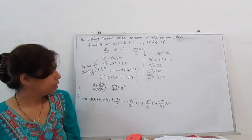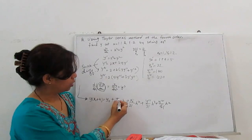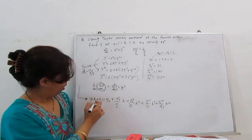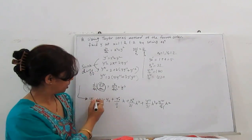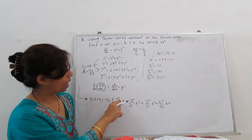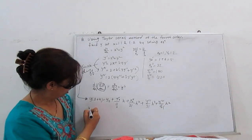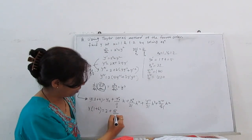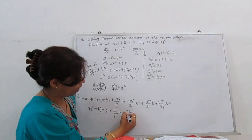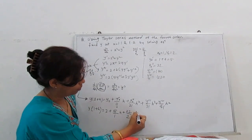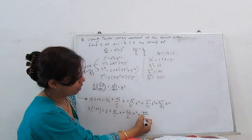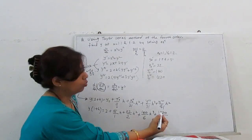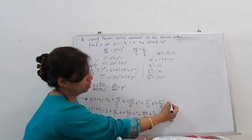The Taylor series expansion to fourth order is: y(x₀ + h) = y₀ + y'₀/1! · h + y''₀/2! · h² + y'''₀/3! · h³ + y''''₀/4! · h⁴. Substituting all values — y₀=2, y'₀=5, y''₀=22, y'''₀=140, y''''₀=1220 — we get: y(1+h) = 2 + 5h + (22/2)h² + (140/6)h³ + (1220/24)h⁴.